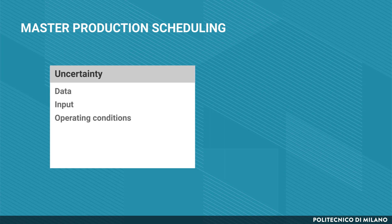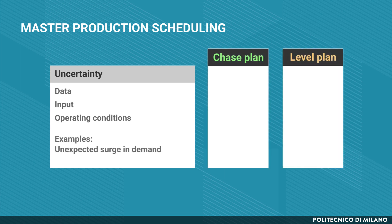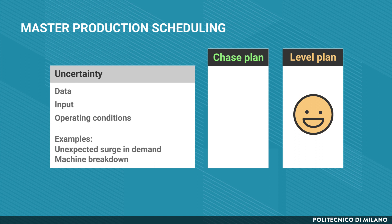If we consider uncertainty — for instance, an unexpected surge in demand or a machine breakdown — then the level approach is usually more useful because it does not stress production resources as much in trying to follow demand so closely.